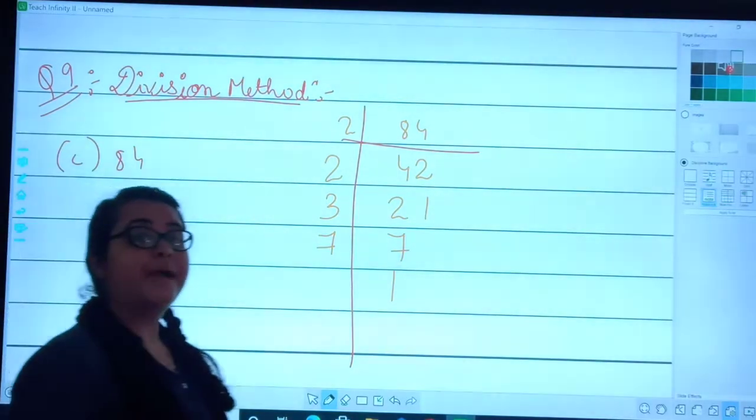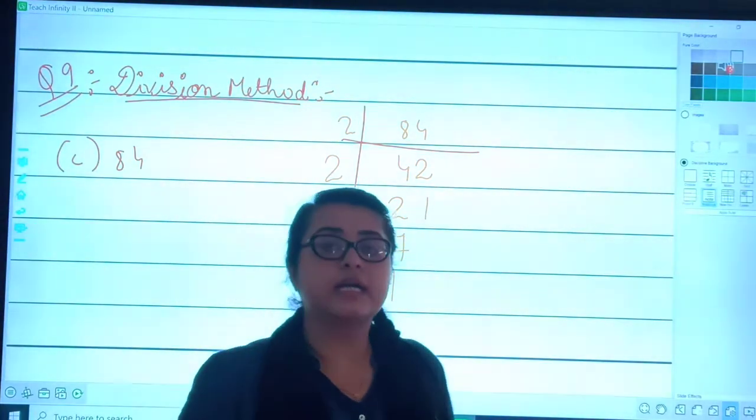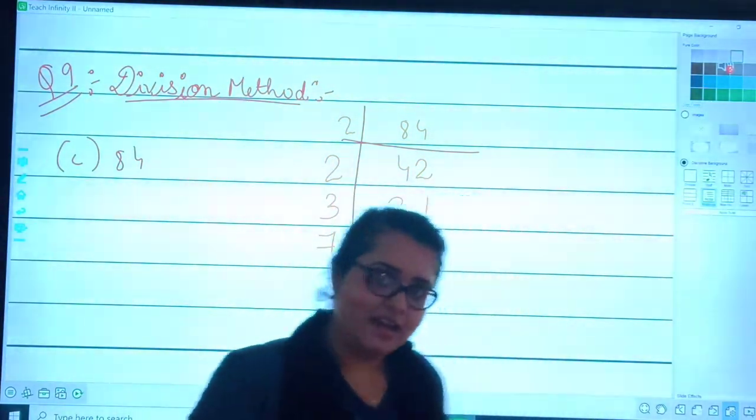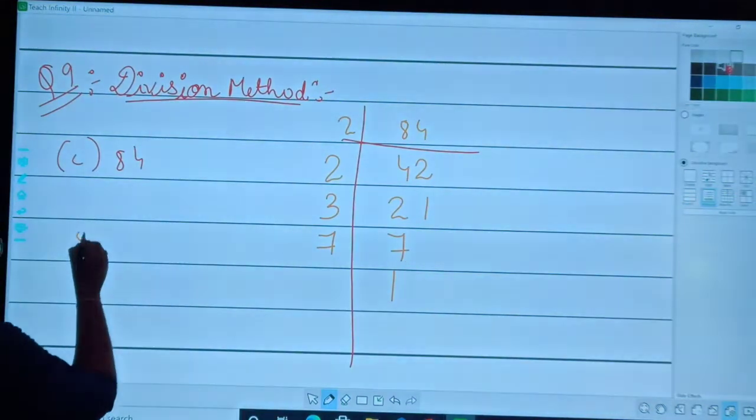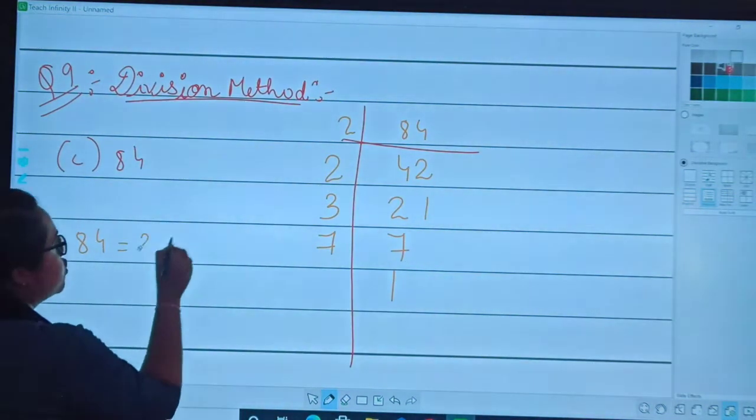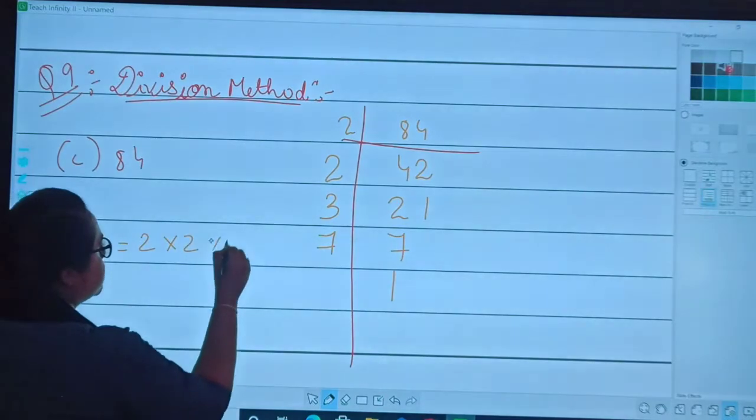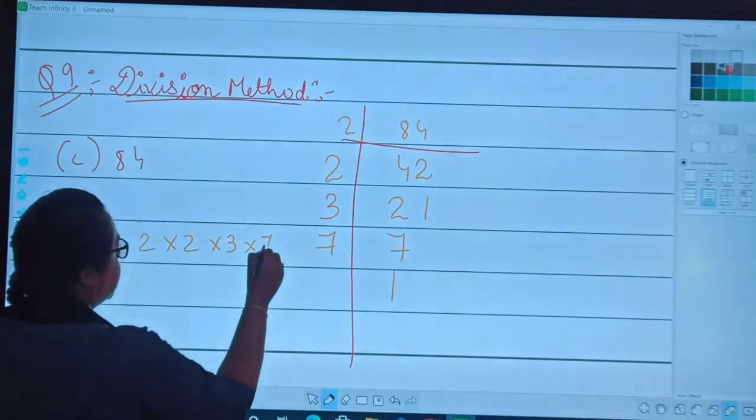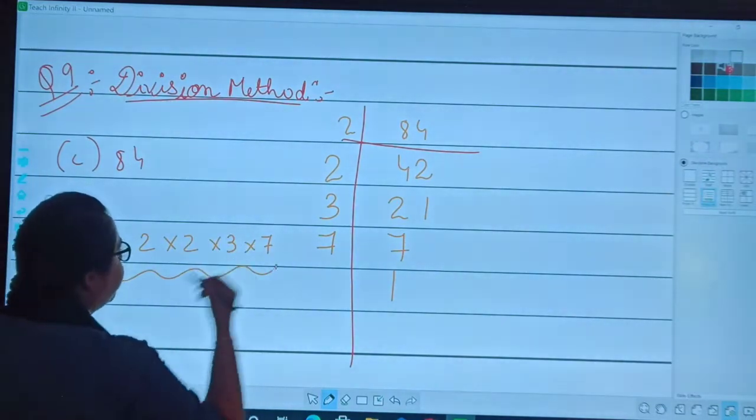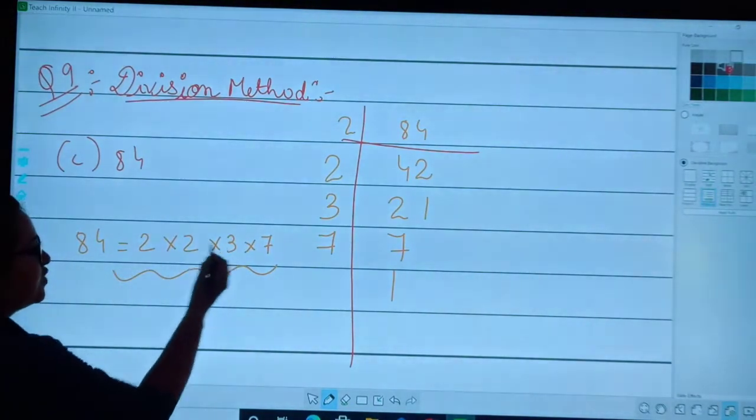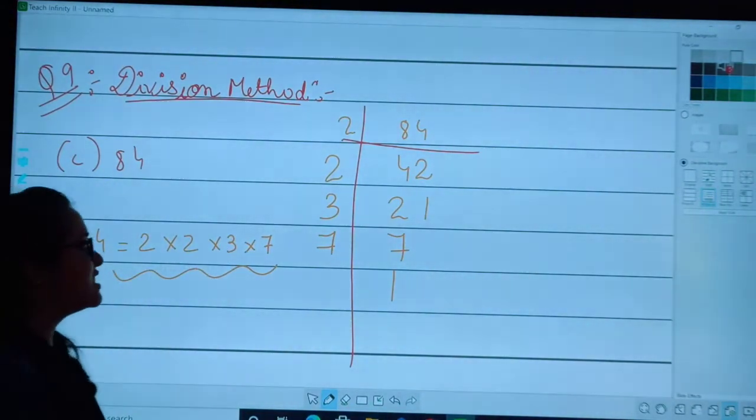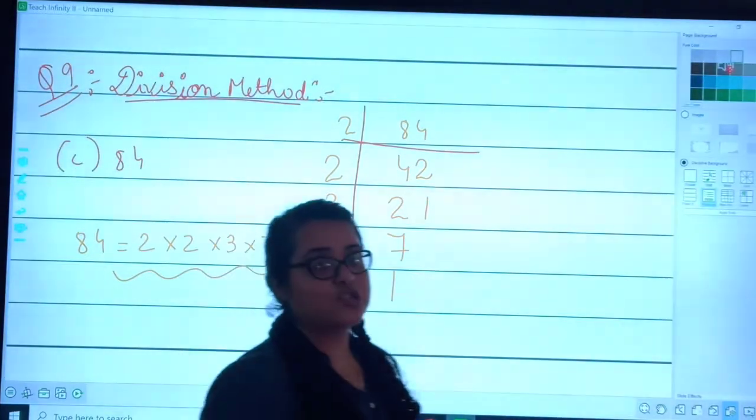Now I will be writing it: 84 equals to 2 into 2 into 3 into 7. These are my prime factors of 84. Let's verify: 2 times 2 is 4, 4 times 3 is 12, 12 times 7 is 84.